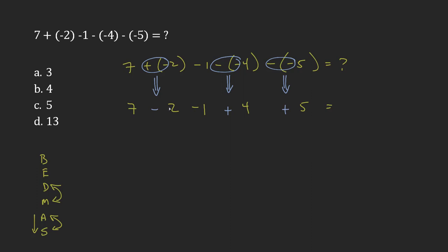So for example, seven minus two, I can replace that one first. That's five. Next, I have five minus one. That's four.